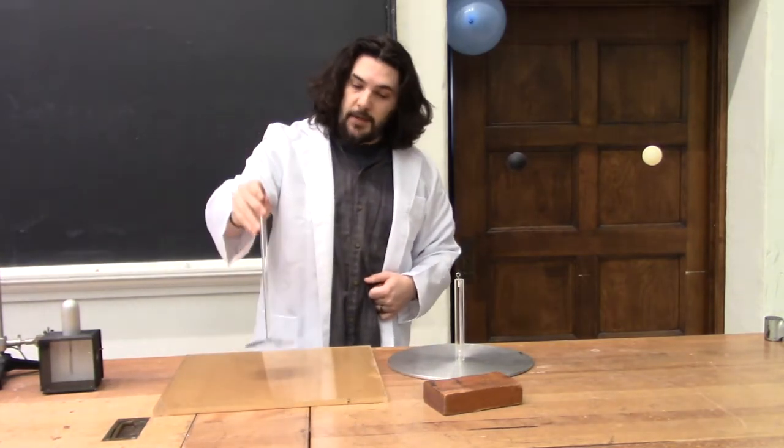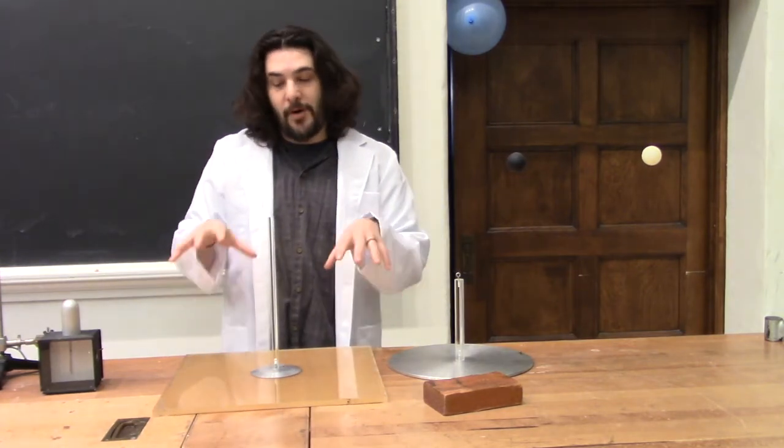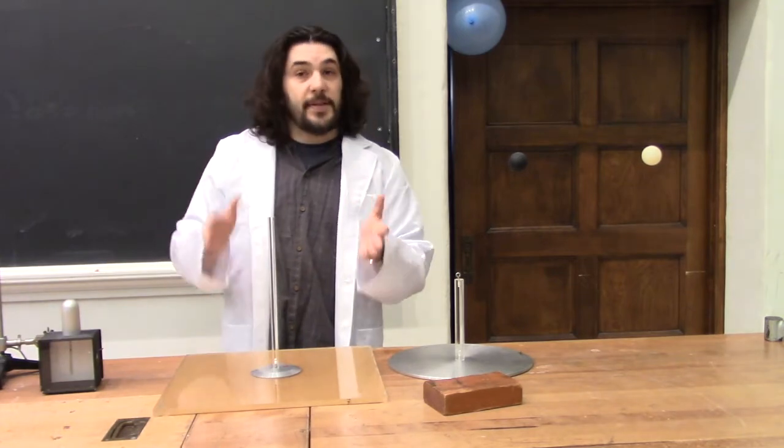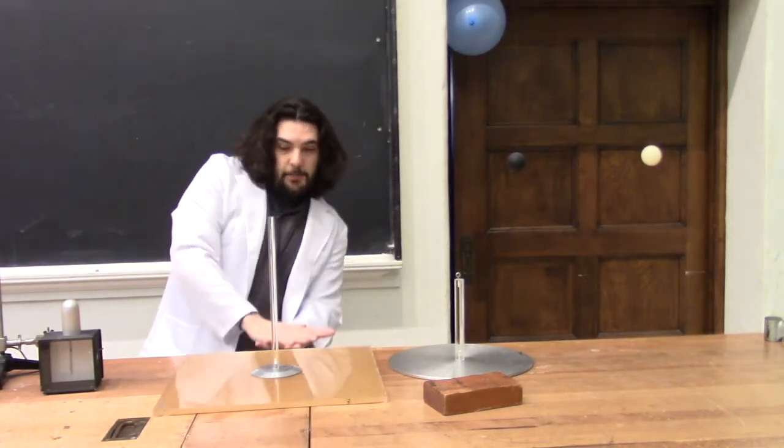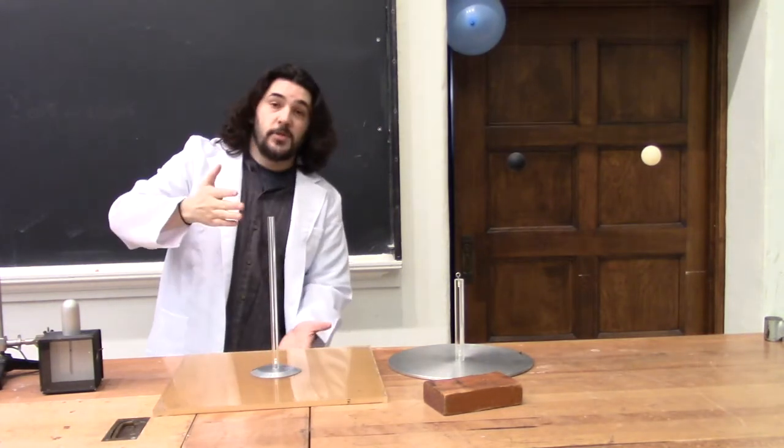If we put a conducting plate on here, the electrons can't jump from the dielectric onto the conductor because it's a dielectric. But they do generate an electric field. The electrons on the plastic push the electrons on the metal to the top, but they can't escape because there's nowhere for them to go.